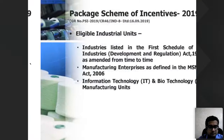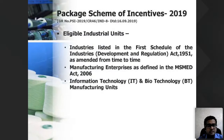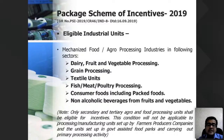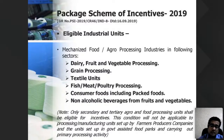Eligible industrial units under PSI include industries listed in the first schedule of manufacturing enterprises as defined in the MSME Act, IT and bio-technology manufacturing units, textile units, grain units, dairy, vegetable processing, consumer food packed foods, and non-alcoholic beverages like fruits and vegetables. Only secondary and tertiary food processing units are eligible — primary food processing units are not covered.